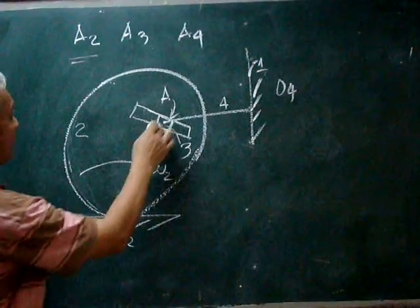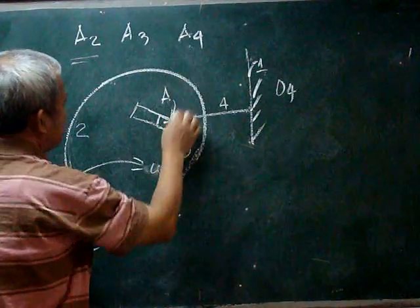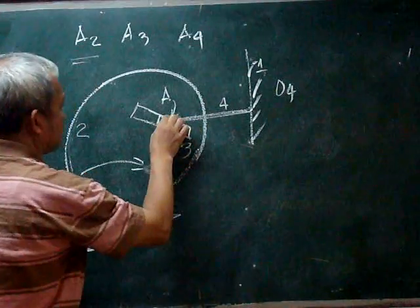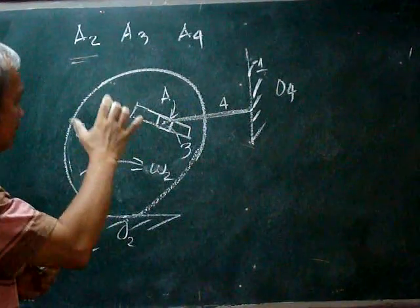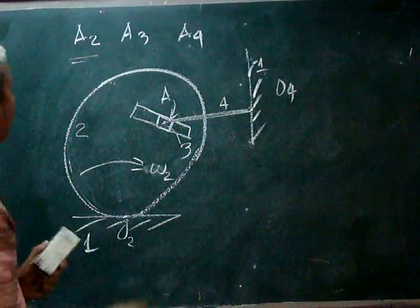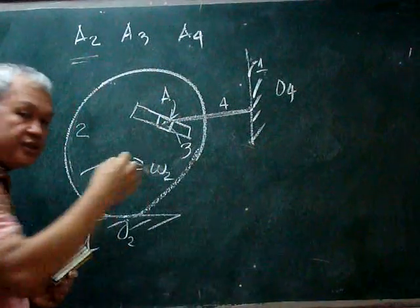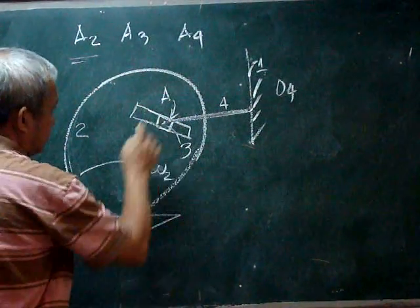And there is again another A4. A4 is at the end of this body 4. And in this particular mechanism, A2, A3, and A4 are coincident at that point.